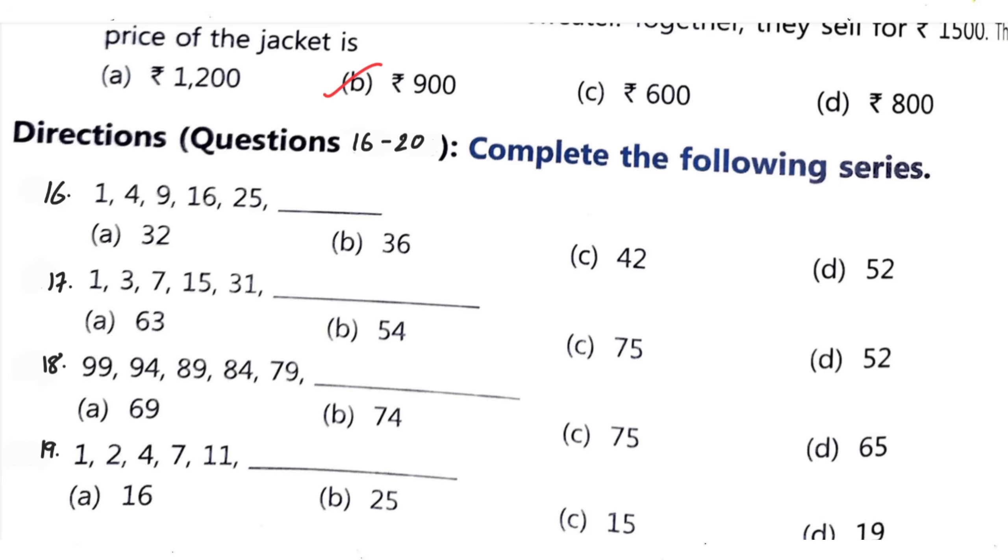Now in next questions you need to complete the series. First series is 1, 4, 9, 16, 25, dash. Correct option is option B, 36. Question number 17: 1, 3, 7, 15, 31, dash. Correct option is option A, 63. Question number 18: 99, 94, 89, 84, 79, dash. Correct option is option B, 74. Question 19 series is 1, 2, 4, 7, 11. Your correct option is option A, 16.